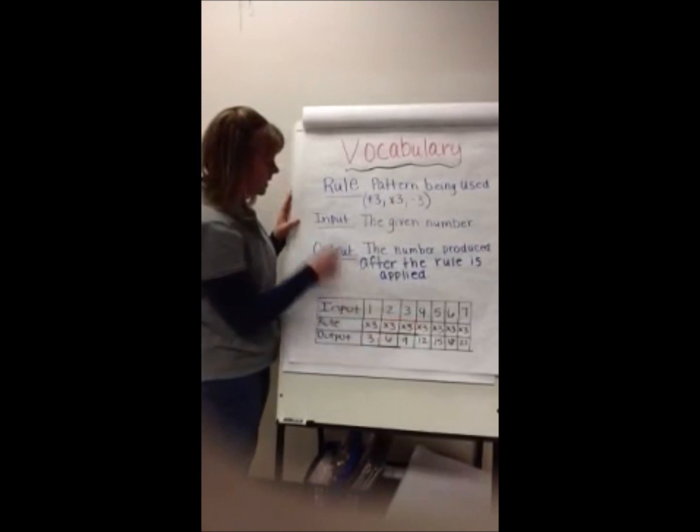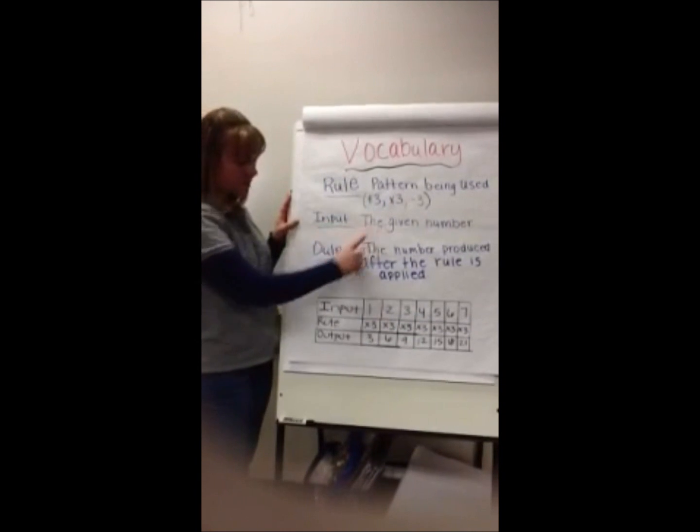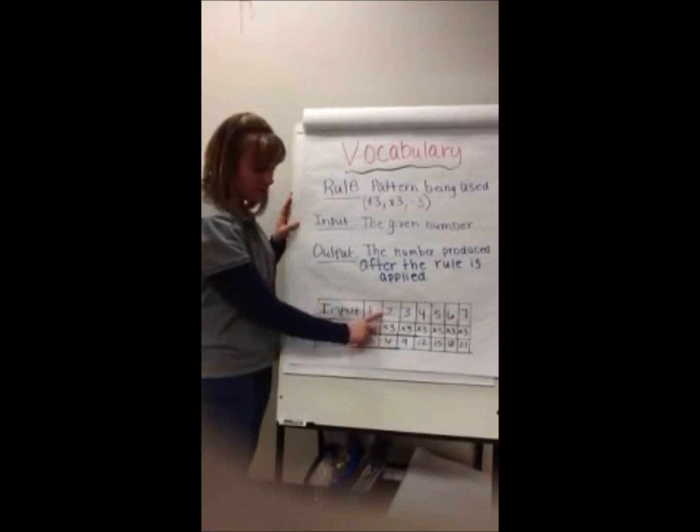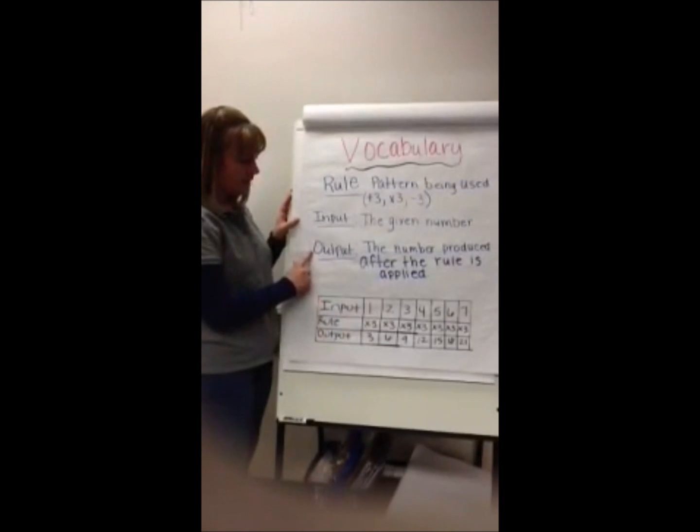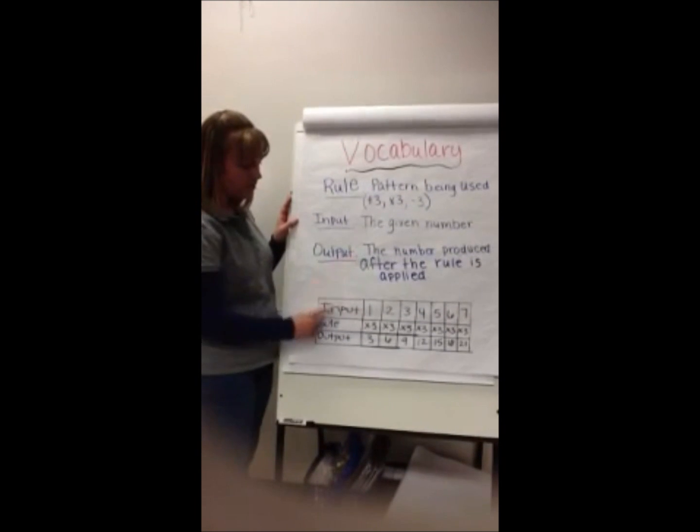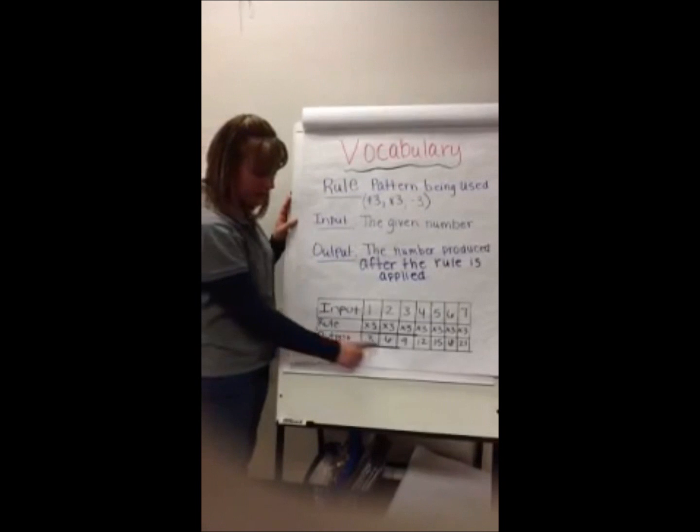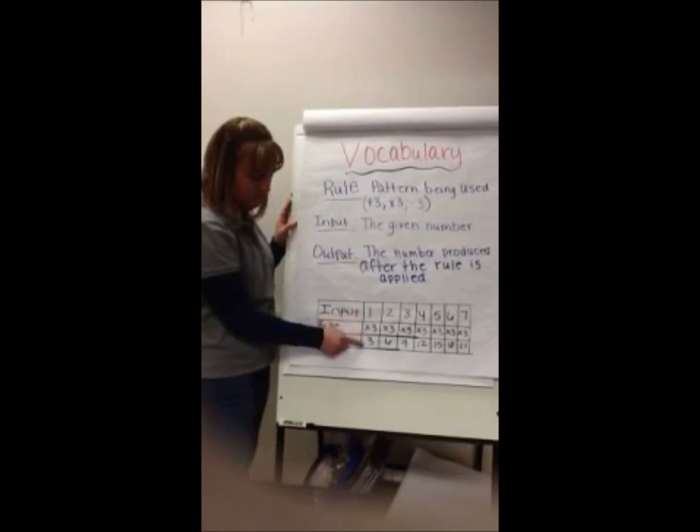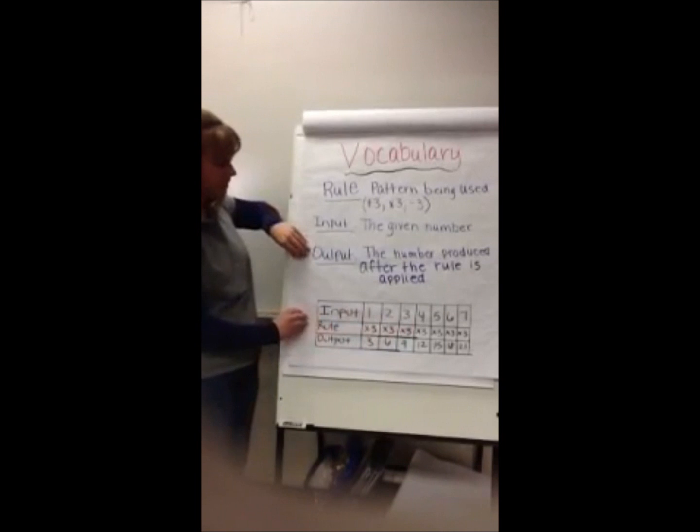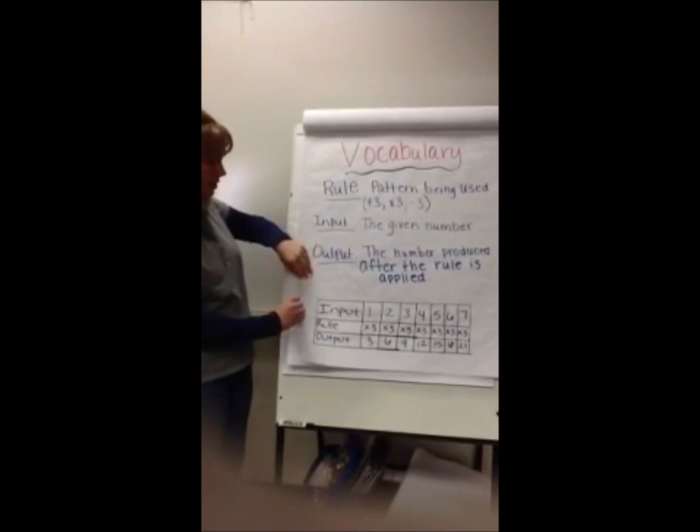So here's our rule. The input is the given number, which is the number that you start with. And we have the output, the number produced after the rule is applied. It's like we have 1 times 3 is 3, 2 times 3 is 6, and so forth. Make sure you write this in your math journal.